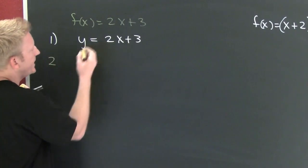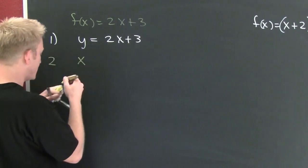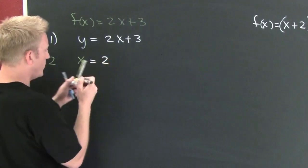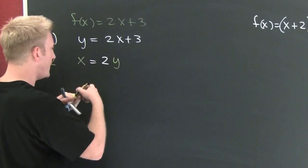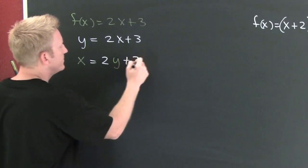In step two, we interchange our x and y. So that means where I saw y, I'm going to put an x. And where I saw an x, I'm going to put a y. Put three on it.